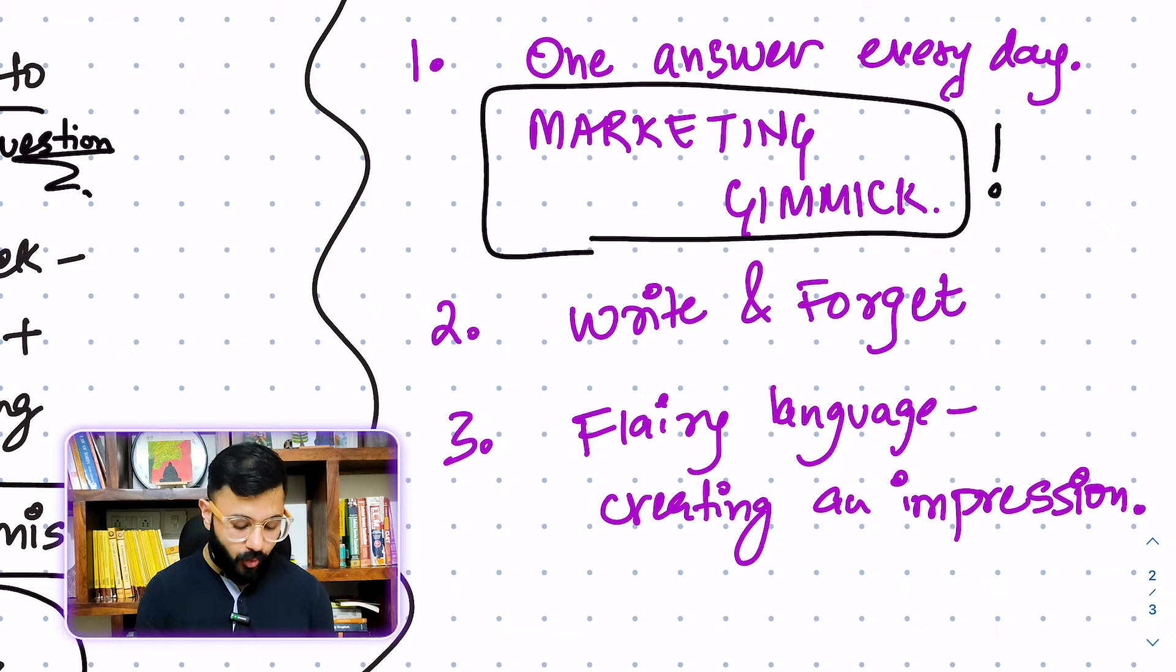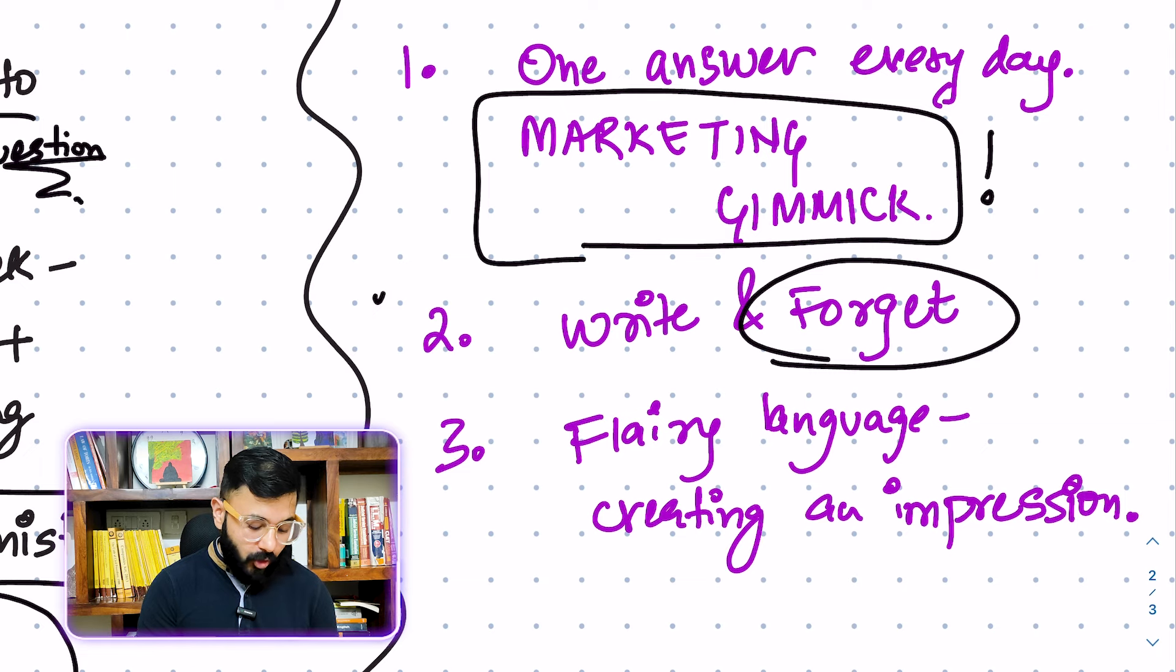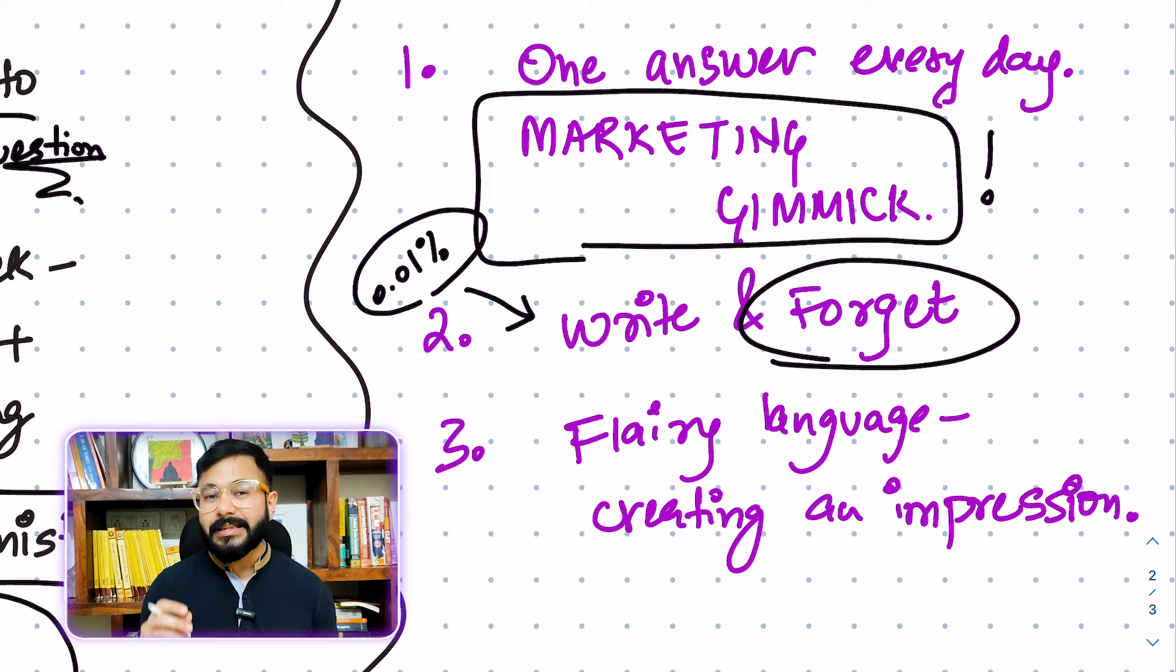Second thing which we should not be doing is to write and forget. This is the majority of students. In fact, I know that the ratio of people who are not doing it is as low as 0.01% of the students. And if you have already reached that level, reached that number of students, you are going to be successful just by not doing this. Just by not forgetting what you have written.